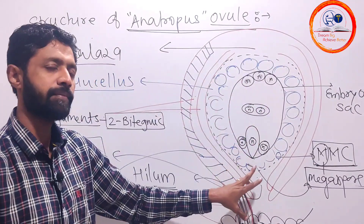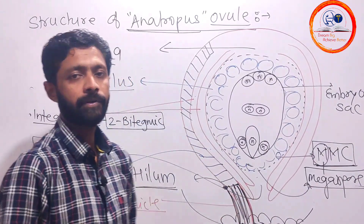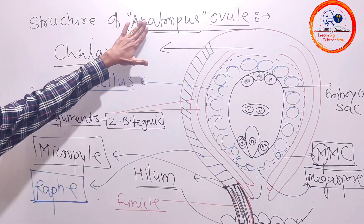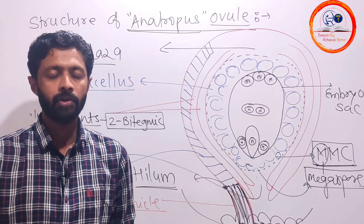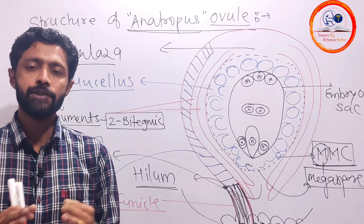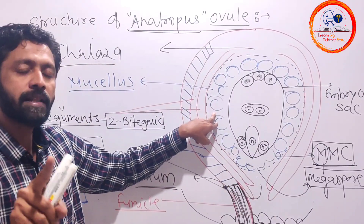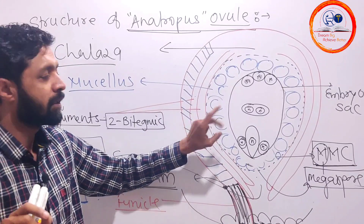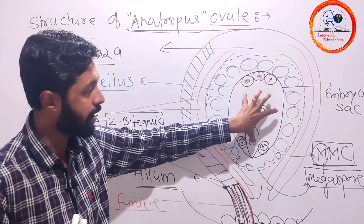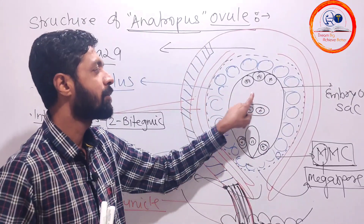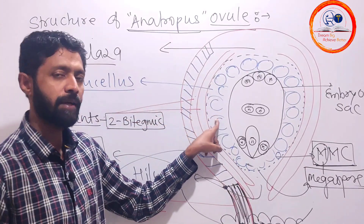The female gametophyte developed from the megaspore mother cell through megasporogenesis and megagametogenesis. Basically, the anatropous ovule is an inverted ovule. The ovule — anatropous ovule — is called megasporangium. In that ovule, the nucellus is where the actual megaspore and female gametophyte are formed, that's why we say the nucellus as megasporangium proper.